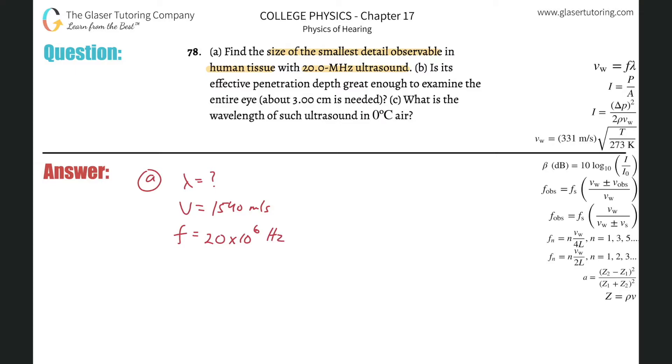Now all I got to do to find the wavelength is simply use that the velocity is equal to the frequency multiplied by the wavelength. The wavelength then would simply be equal to the velocity divided by the frequency. And the wavelength here we're going to have 1540 all over 20 times 10 to the sixth.